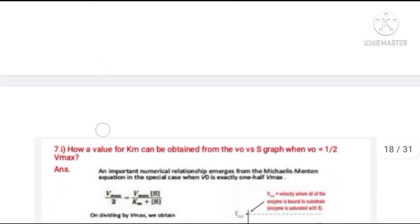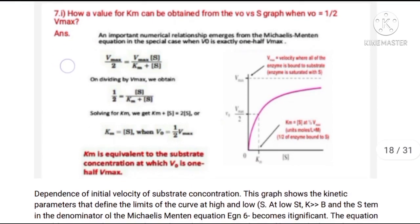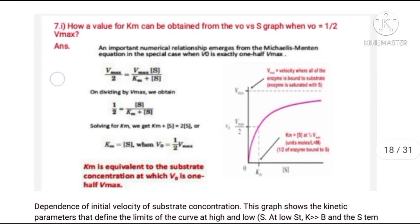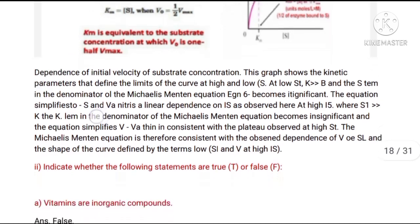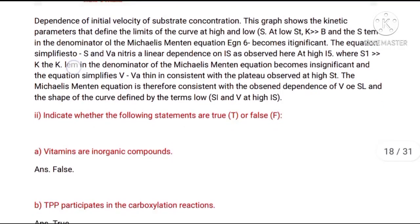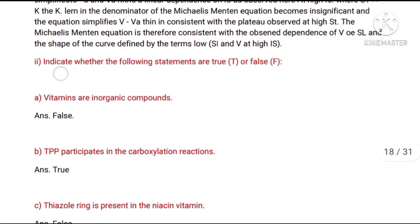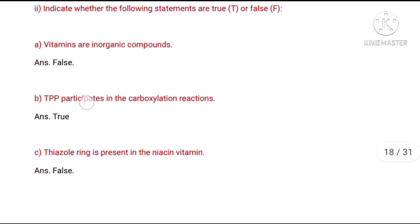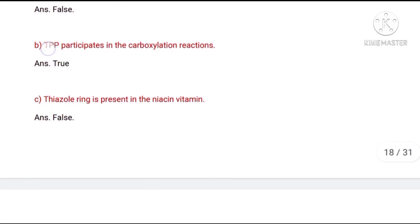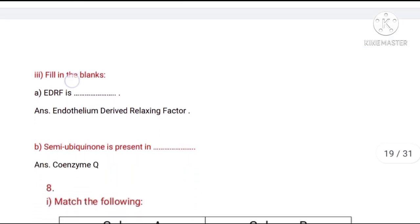Question number 7, first part: How can the value of Km be obtained from the V0 versus S graph when V0 is half Vmax? Question number 7, second part: Indicate whether the following statements are true or false. A. Vitamins are inorganic compounds. B. TPP participates in the carboxylation reaction. C. Thiazole ring is present in niacin vitamin. Question number 7, third part: Fill in the blanks.